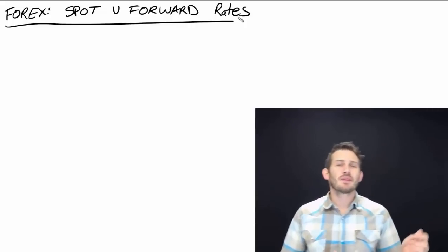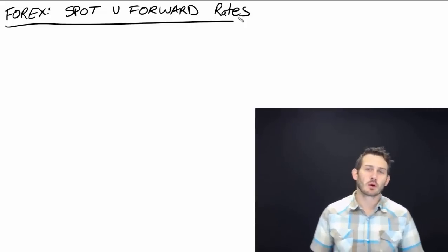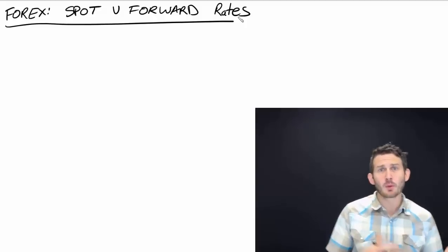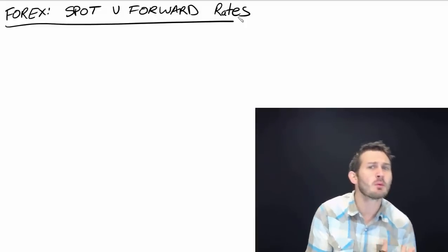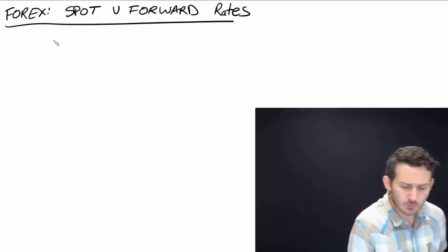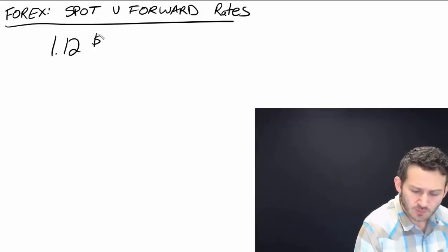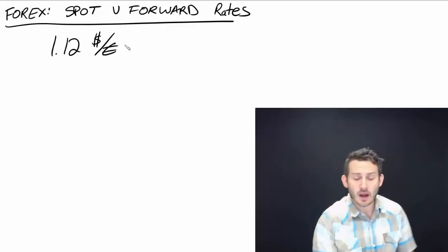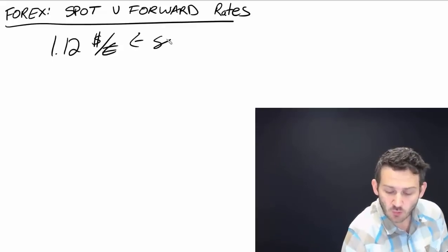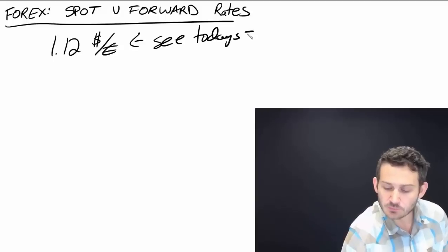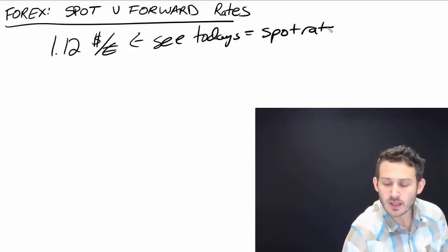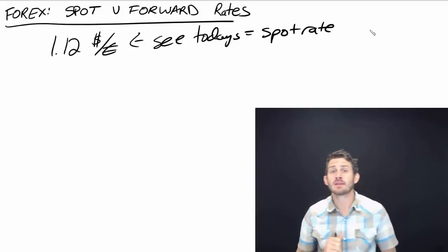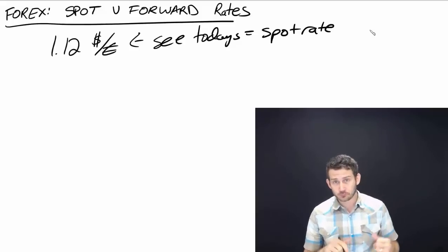Hello and welcome. Today we are talking about the difference between a spot rate and a forward rate. When we pull up Bloomberg, Yahoo Finance, or whatever we want, we're looking at a given exchange rate — let's say 1.12 dollars per euro. That rate that we see today is what we call a spot rate; it's the rate we see right now.